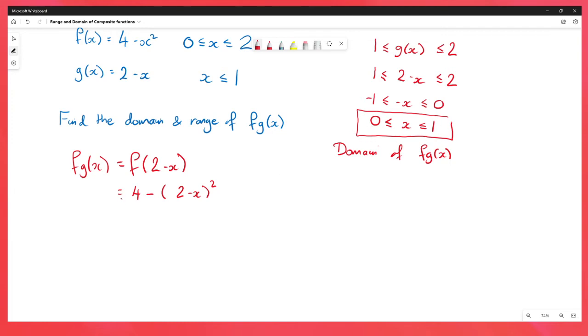Now because fg of x is still quadratic, it's continuous across the whole domain. So we don't need to think about too much with this. So we know here we've got the vertex is going to be 4, sorry minus 2, 4. And it's going to be this way up.